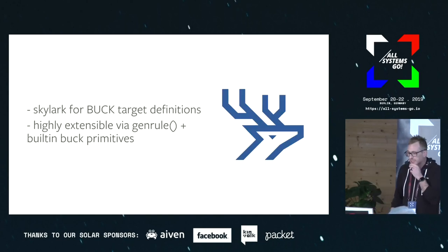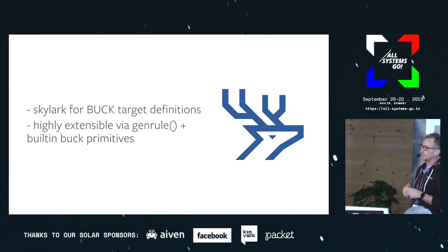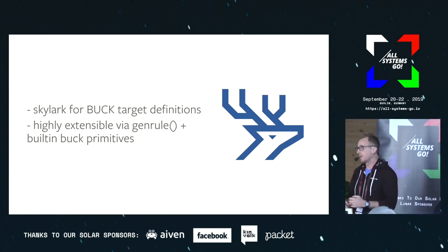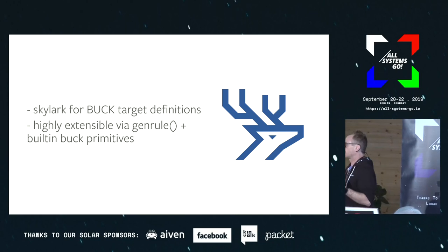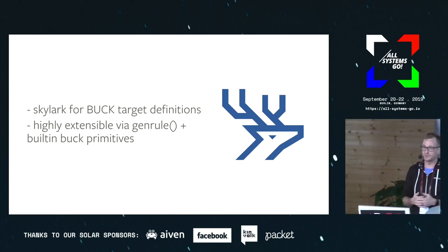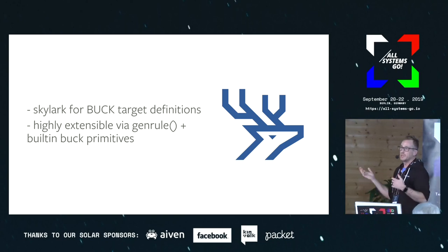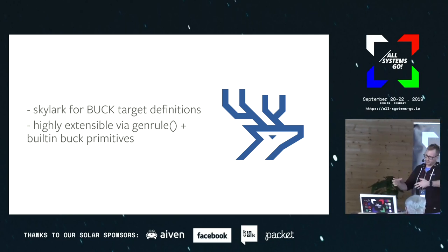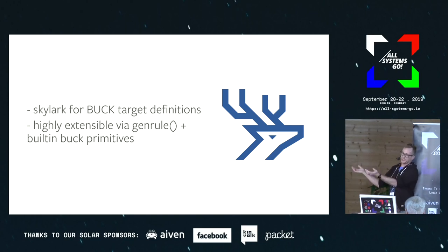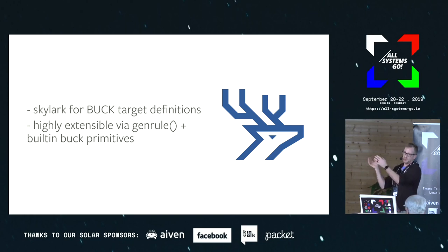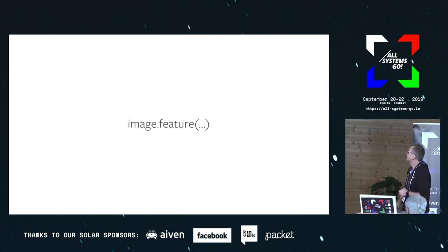Skylark is used for the Buck target definitions. It's highly extensible via the general and built-in Buck primitives. As we start playing with this, we can add additional features on top of the basic image feature primitives. This allows us to build more complex behavior using smaller building blocks and end up with an abstraction that gives users a pseudo-API — for example, to enable a systemd unit inside of an image during a build.